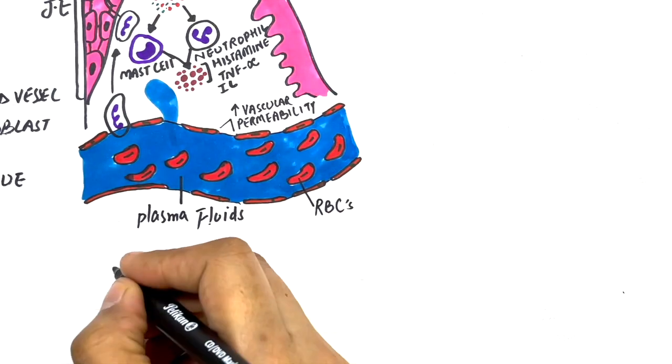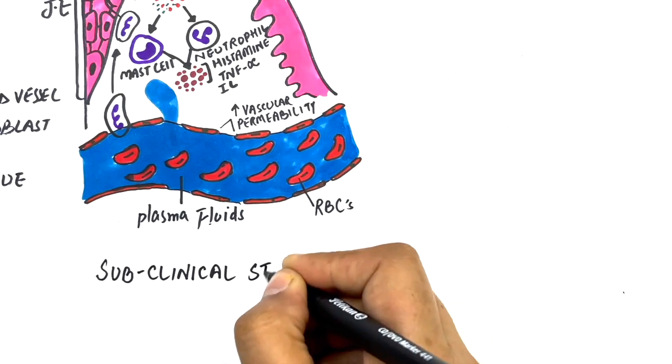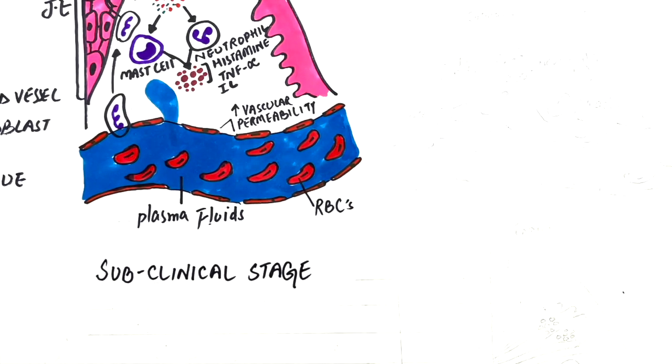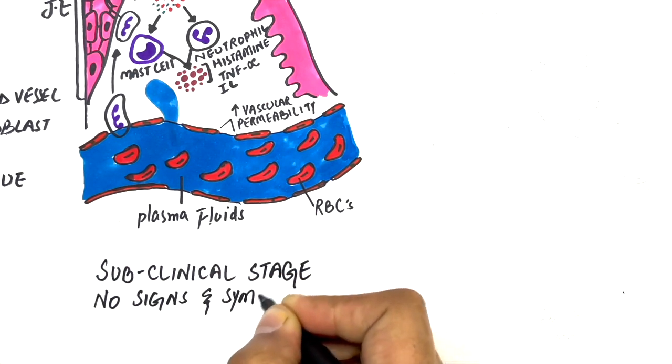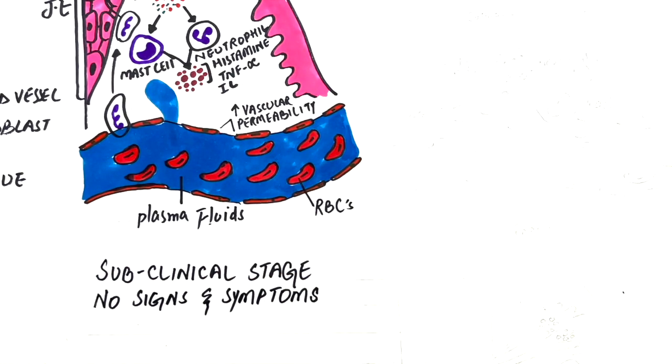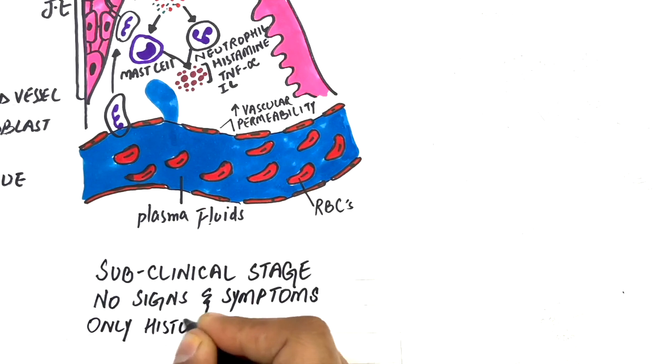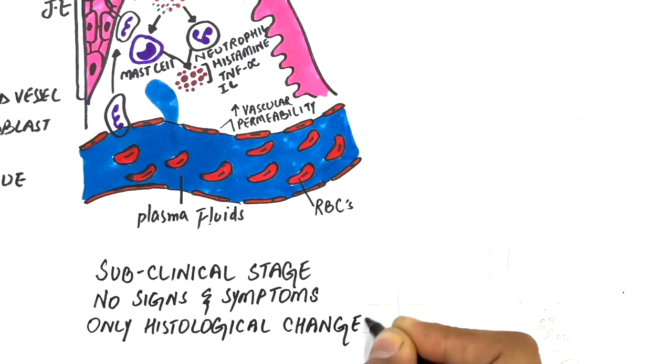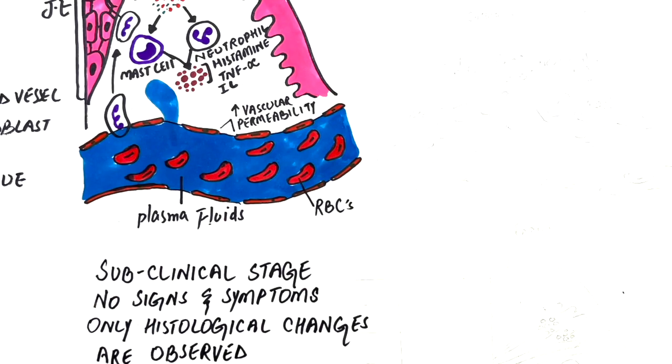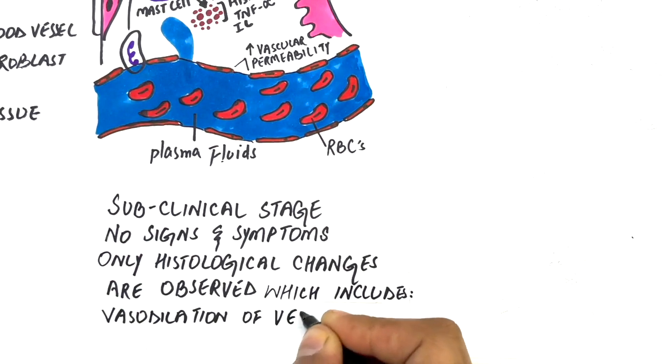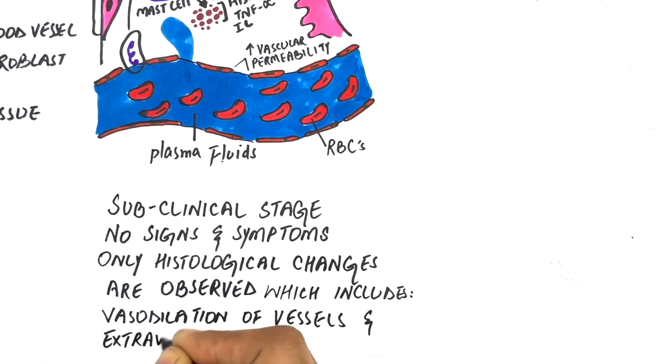This first stage of gingivitis is known as the subclinical stage because no obvious changes are detected on a clinical level. There are no obvious signs and symptoms of the disease process. In this initial stage, only histological changes can be seen under a microscope. These histological changes are mild vasodilation of blood vessels subjacent to the junctional epithelium, which is then followed by extravasation of plasma fluids and inflammatory cells within the gingival sulcus, hence increasing the gingival crevicular fluid.